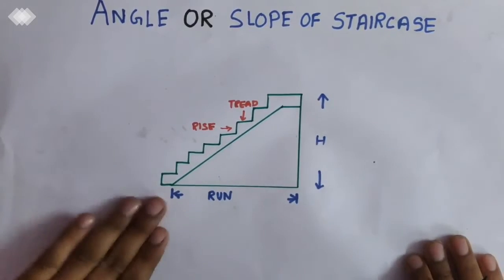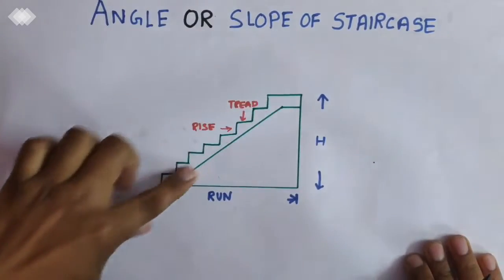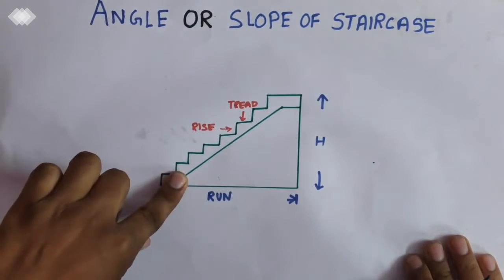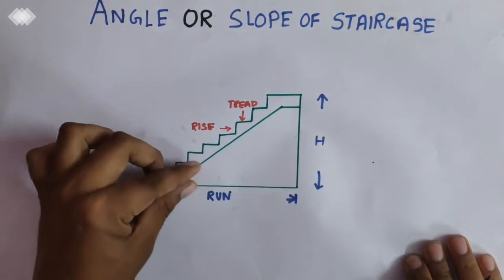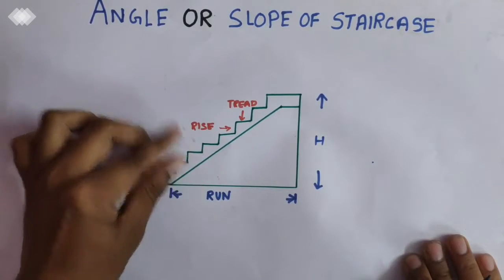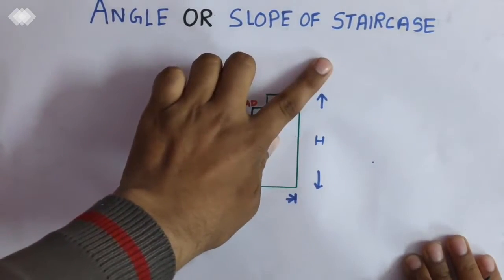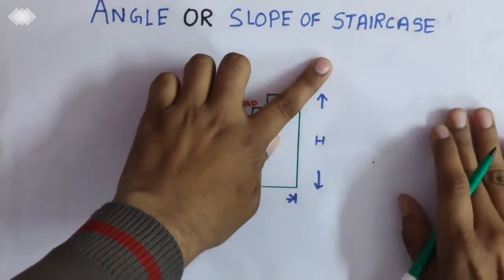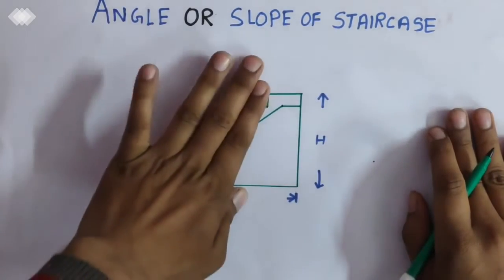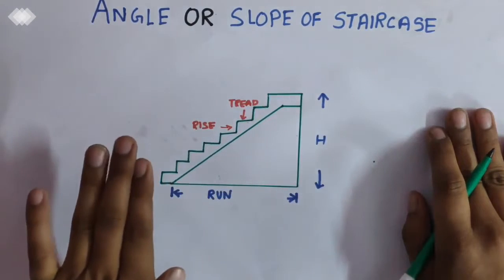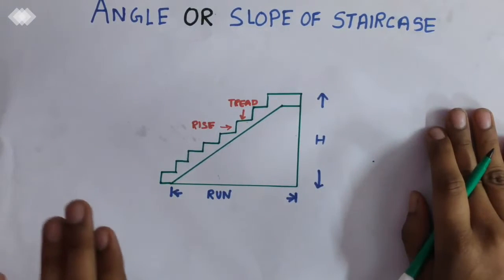The staircase makes an angle with the run. The angle it makes is called angle or the slope of staircase. So how to calculate this angle or slope of staircase we will discuss in this particular video.